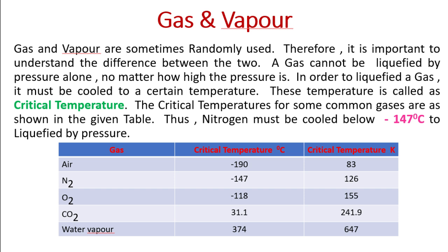Let us look at some common gases with their critical temperatures. Air has a critical temperature of minus 190 degrees centigrade, or 83 Kelvin. Nitrogen (N₂) has a critical temperature of minus 147 degrees centigrade, or 126 Kelvin.